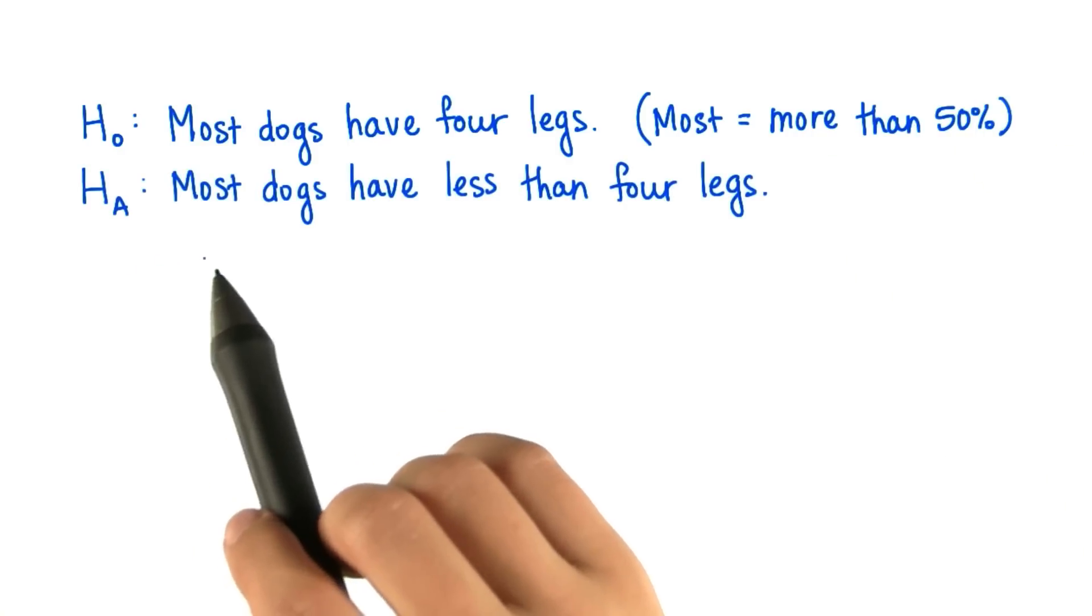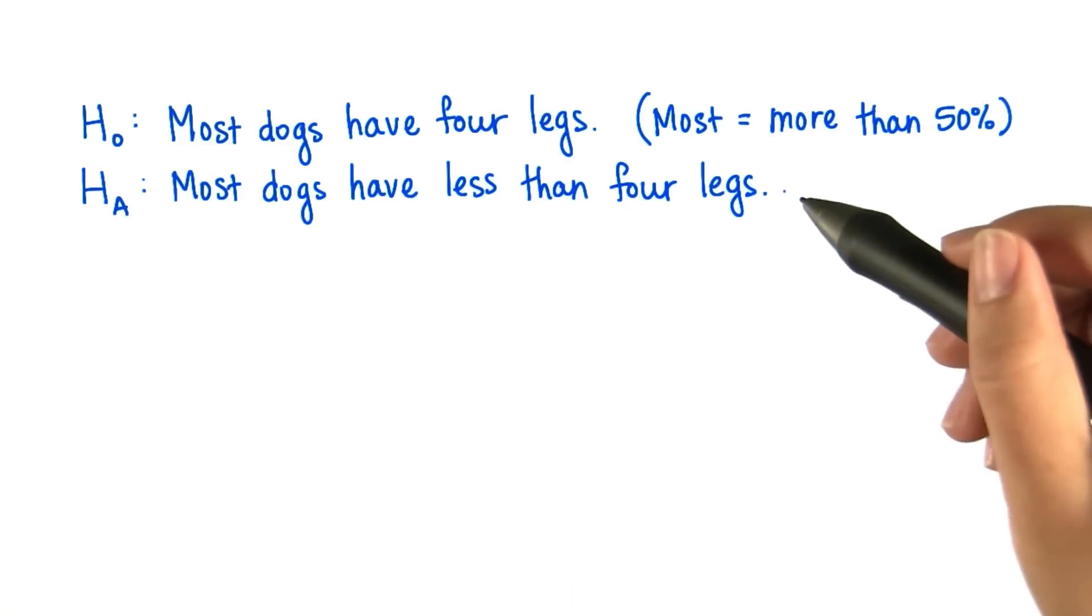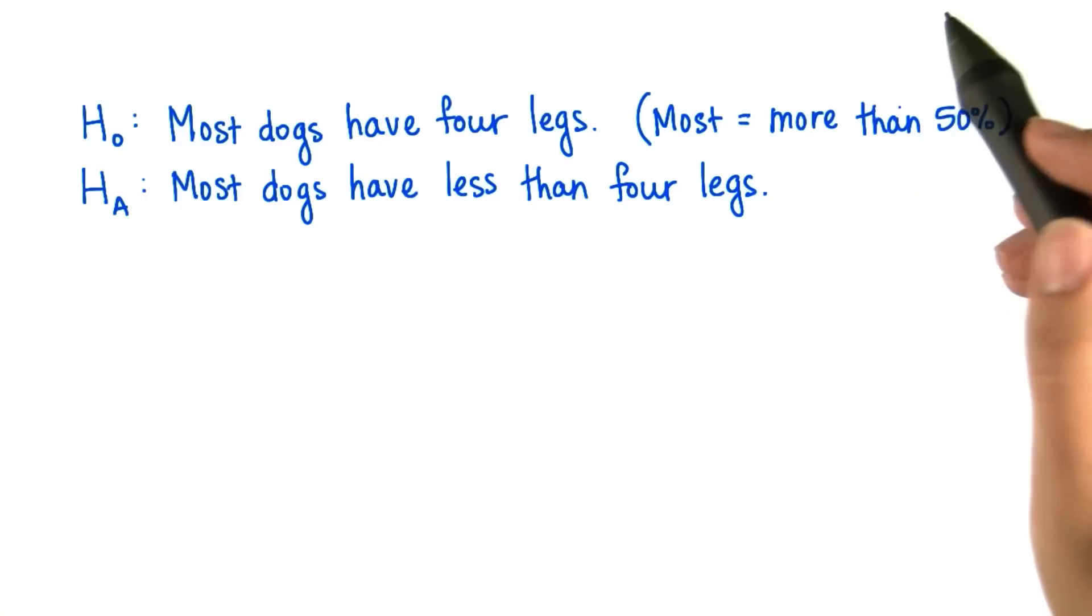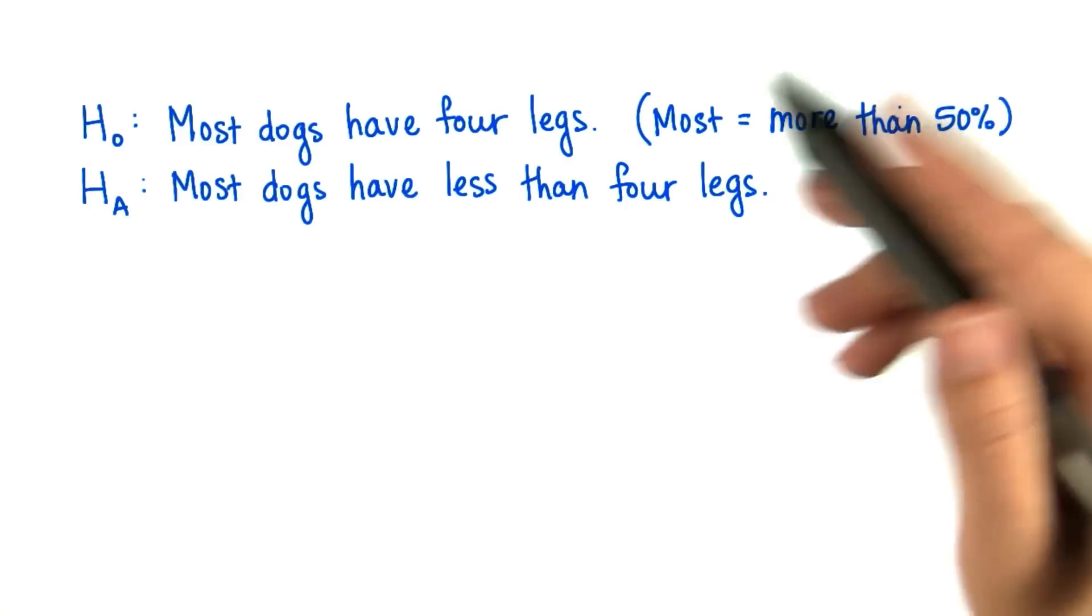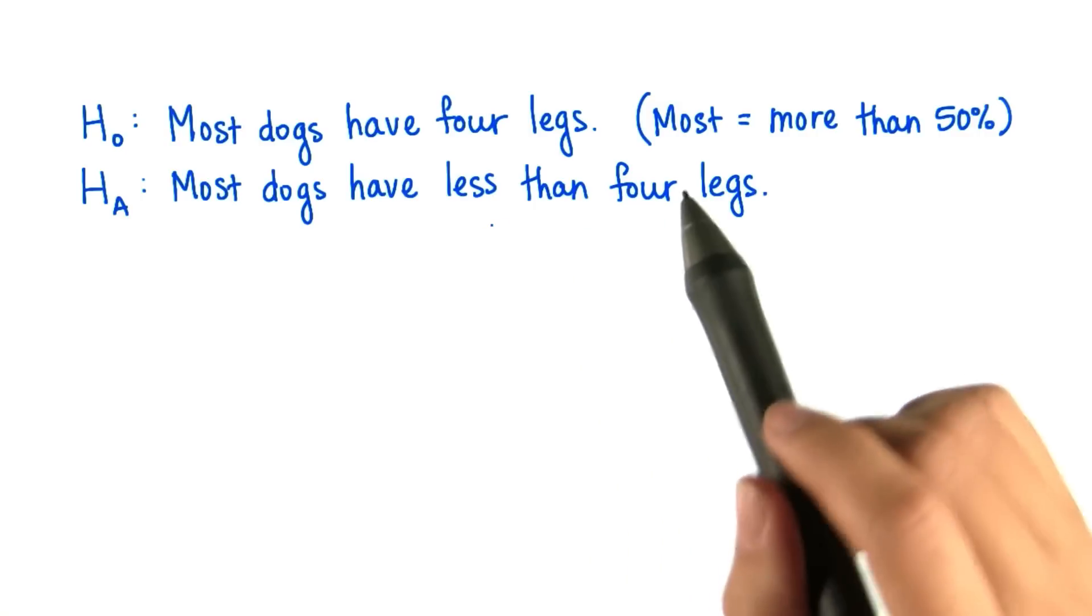Our alternative hypothesis is that most dogs have less than four legs. Note that this is like a one-tailed test, where we're not guessing that most dogs have a different amount than four legs. We're guessing most dogs have less, so there's a direction.